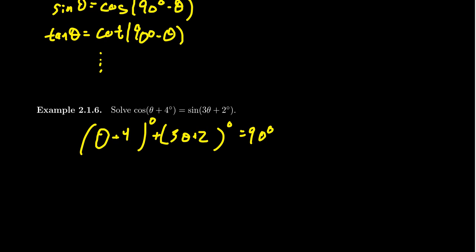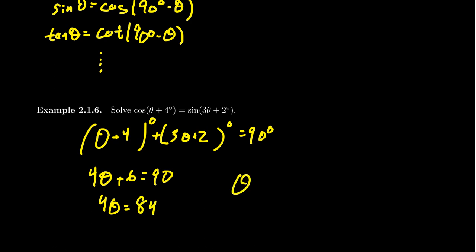Adding like terms: theta + 3 theta gives 4 theta, and 4 + 2 gives 6, so 4 theta + 6 = 90 degrees. Subtract 6 from both sides: 4 theta = 84. Divide both sides by 4: theta equals 21 degrees.